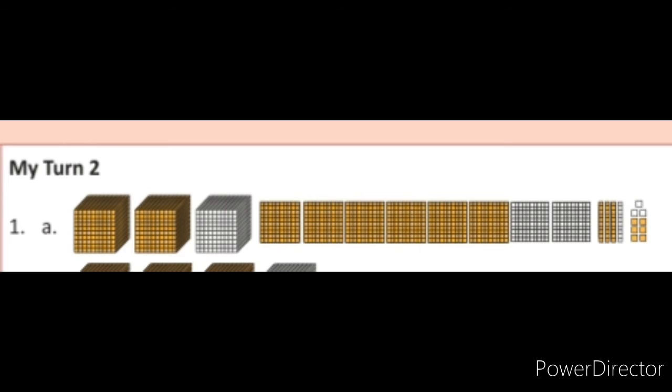यहाँ 1000 equal to one block था, तो हमने two blocks को color किया है. Because two blocks equal to 2000. Six hundred को show करने के लिए हमने six squares को color किया है, और three tens को show करने के लिए हमने three rods color किया है. Six ones को show करने के लिए हमने six small cubes color किया है.